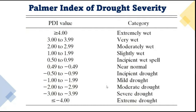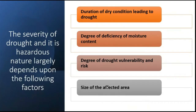The severity of drought and its hazardous nature depend on various factors. Before discussing impacts, the first factor is the duration of the dry condition that leads to drought. Different definitions mention different durations - the British Rainfall Organization mentions 15 days, Konin mentions 20 days. If the duration is longer, the severity will definitely be greater.